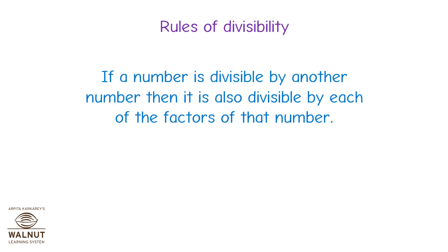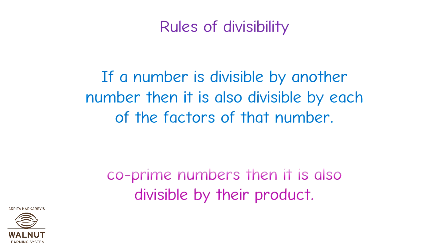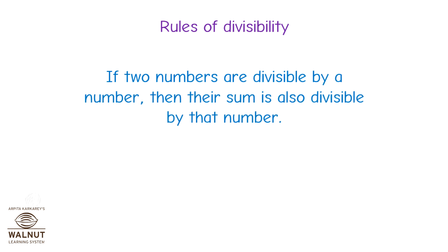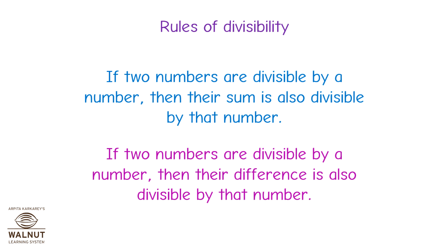Rules of Divisibility. If a number is divisible by another number, then it is also divisible by each of the factors of that number. If a number is divisible by 2 co-prime numbers, then it is also divisible by their product. If two numbers are divisible by a number, then their sum is also divisible by that number. If two numbers are divisible by a number, then their difference is also divisible by that number.